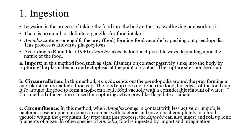According to Rumbler (1930), amoeba takes its food in four possible ways, depending upon the nature of the food. A. Import: In this method, food such as an algal filament on contact passively sinks into the body by rupturing the plasmalemma and ectoplasm at the point of contact. The rupture site soon heals up.